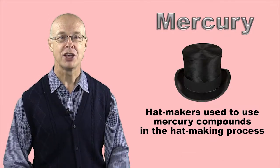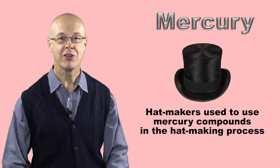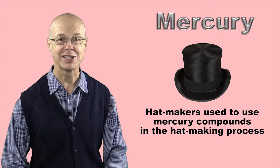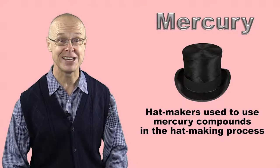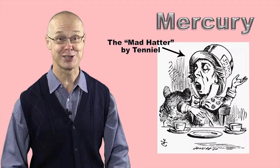Mercury compounds used to be used to treat the fur used to make the felt in hats. The mercury vapor hat makers breathed in damaged their central nervous systems, driving many of them bonkers. Hence the expression, mad as a hatter.